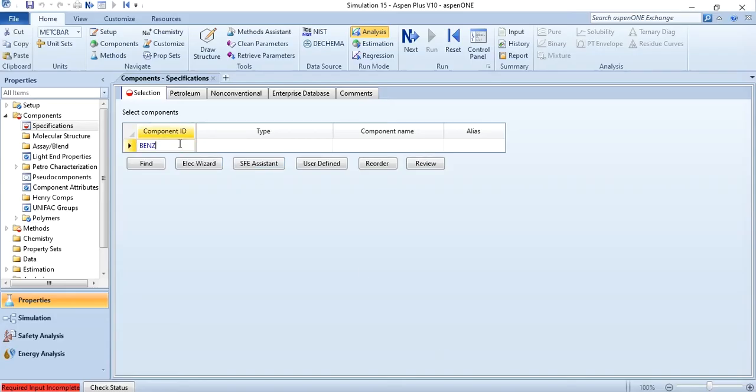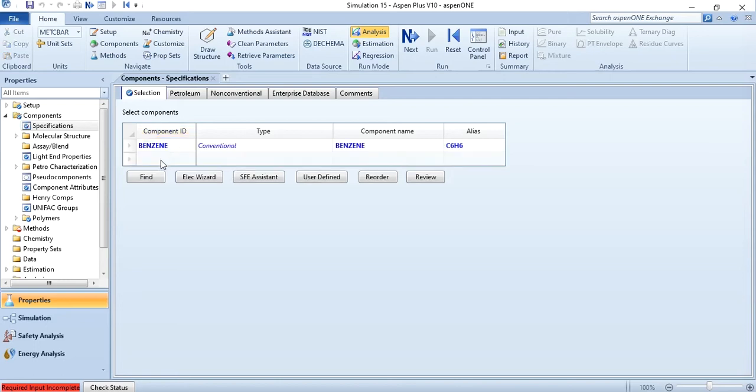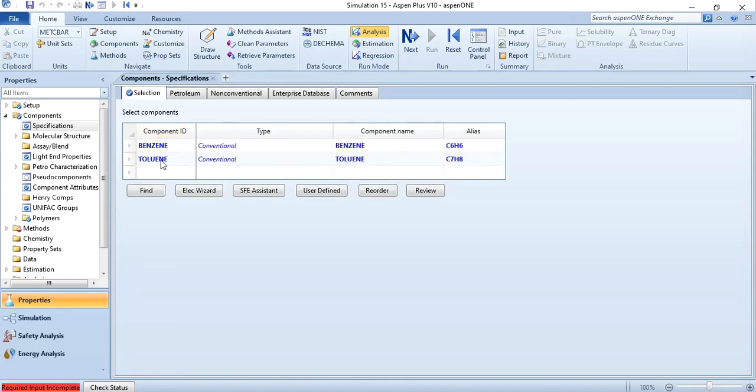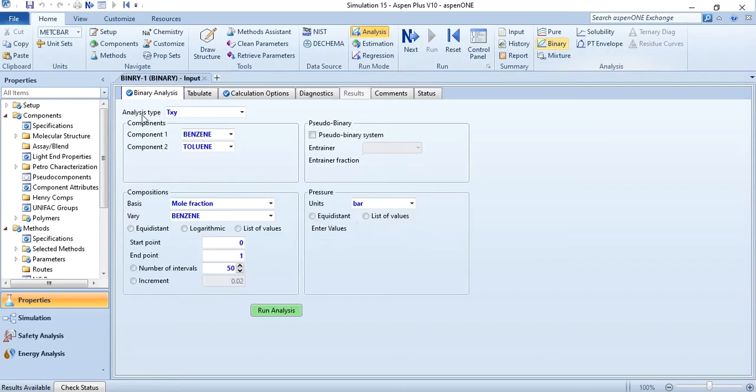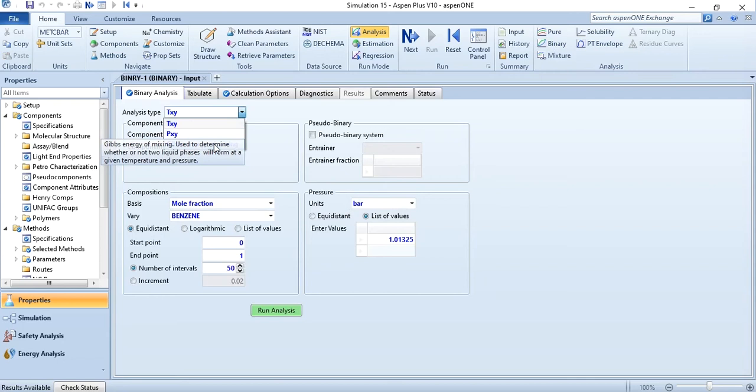Firstly we will select our components benzene and toluene, and after that we will select ideal property package for this and we will run it to ensure that results are available and there are no warnings in the system. Since results are available successfully, so going to binary tab and click binary and as you see that analysis type available is TXY. What type of analysis are given? TXY, PXY and Gibbs energy of mixing. So select TXY.